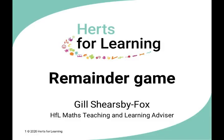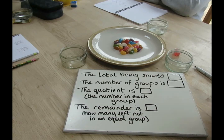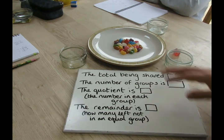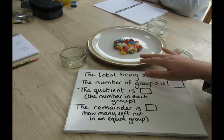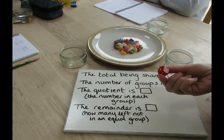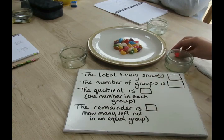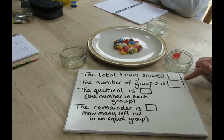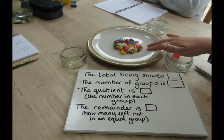Welcome to our video on how to play the remainder game, a division game that involves sharing a set of objects and calculating the remainder. Today we're going to play the remainder game. This is a game that involves sharing out a collection of things. We have chosen to share out jelly beans today, so we can hopefully eat our winnings. The other thing you need is a dice.